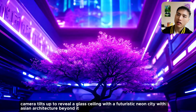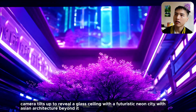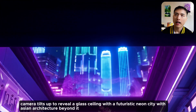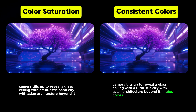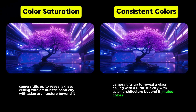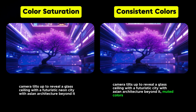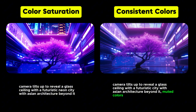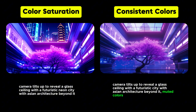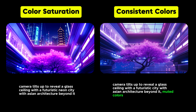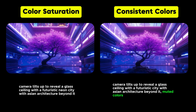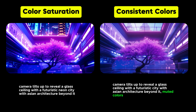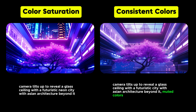For example, we can tilt up and look at the city through a glass ceiling. This was another example where the AI adds in color saturation — you'll see this color change very obviously. In the prompt on the right, I removed the word 'neon' and added in 'muted colors,' and it does a better job of preserving color consistency, although we're missing the aesthetic neon city lights at night. AI isn't perfect yet.